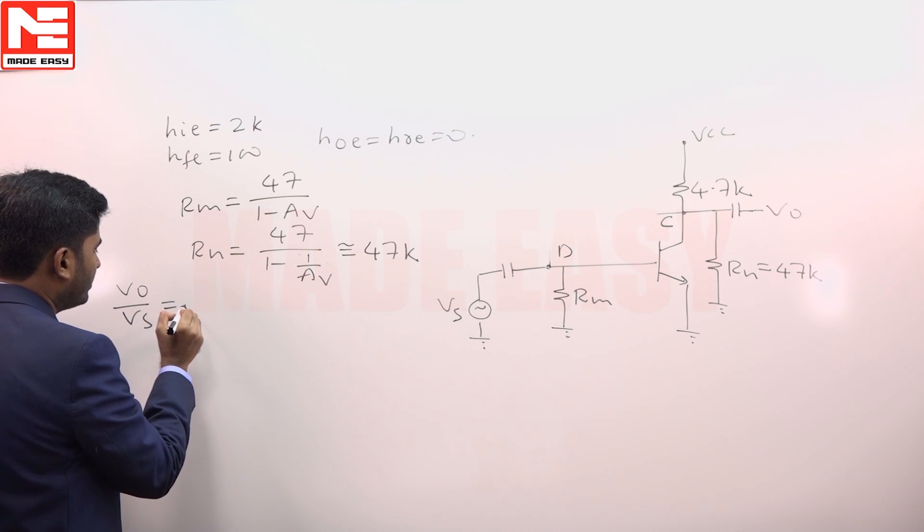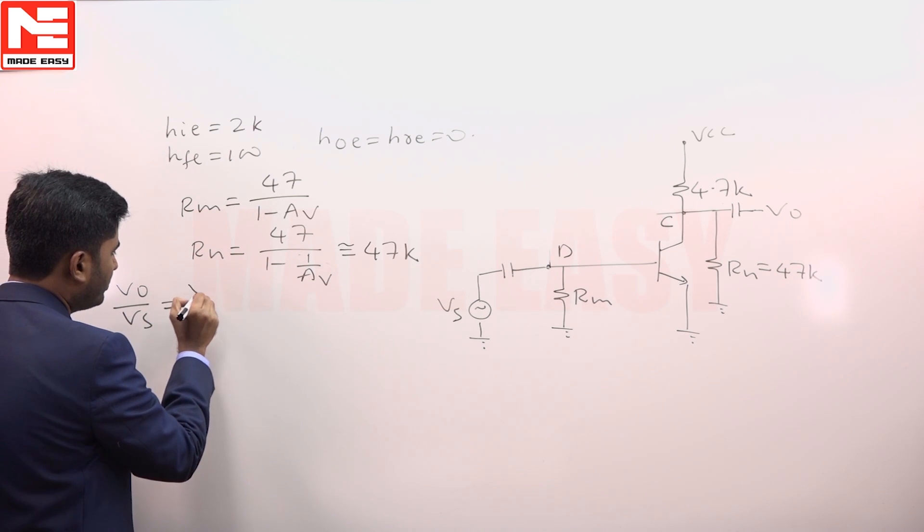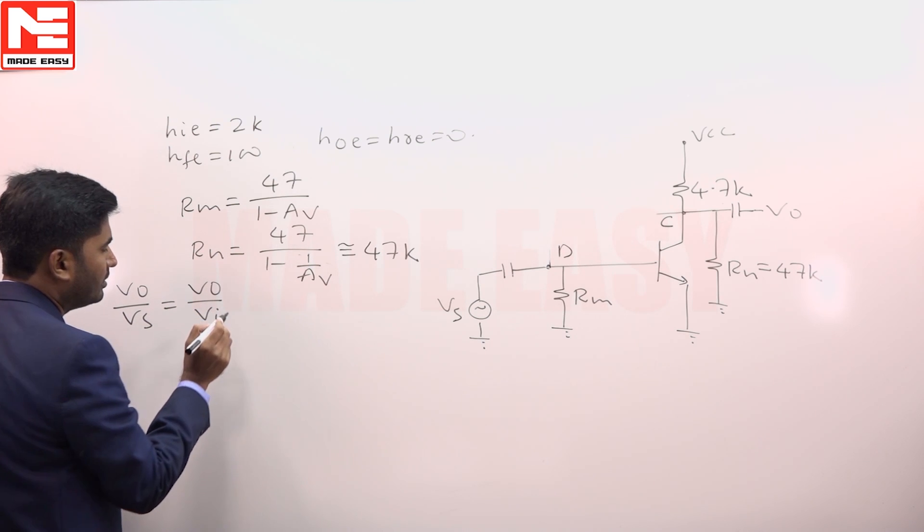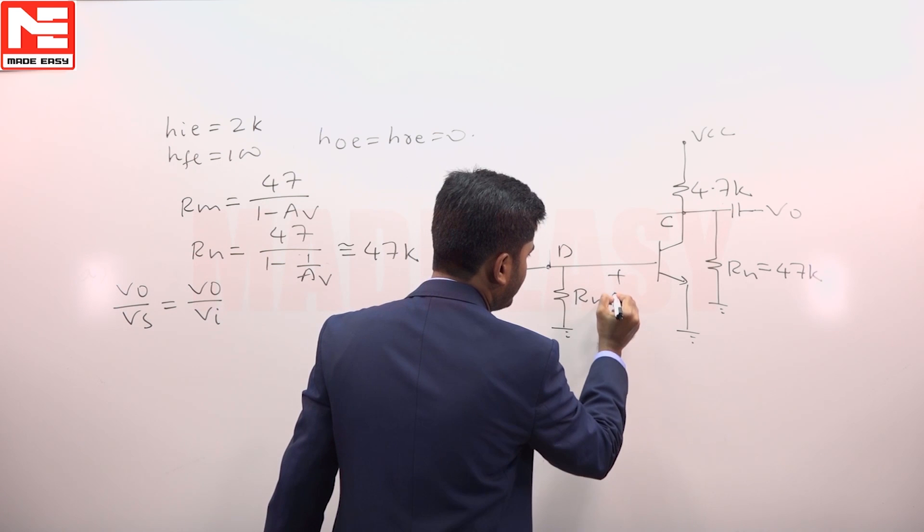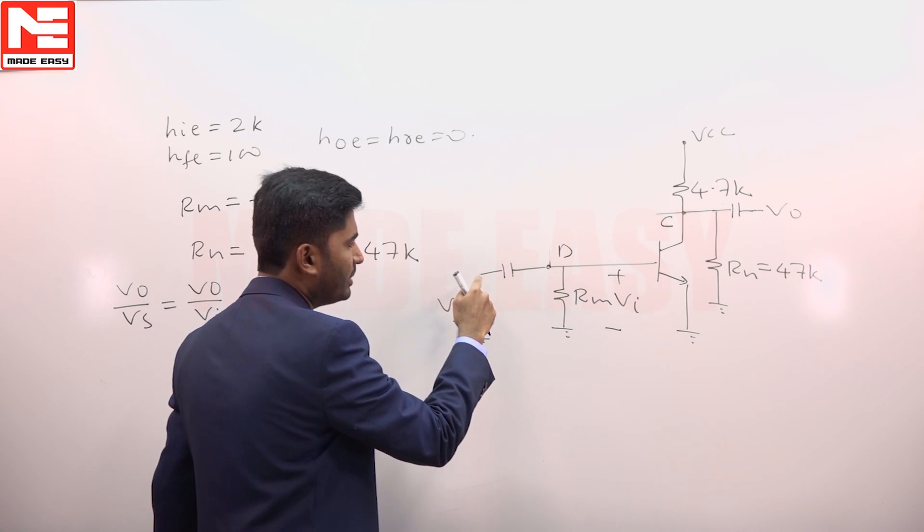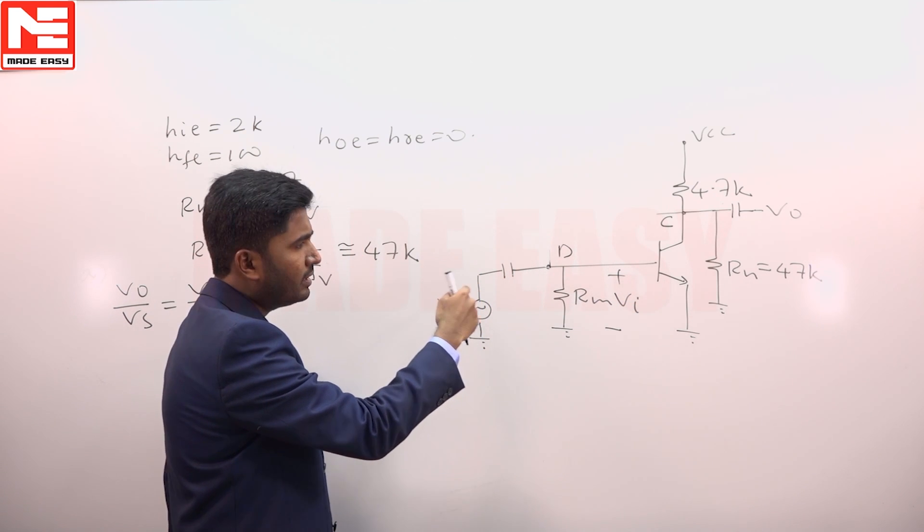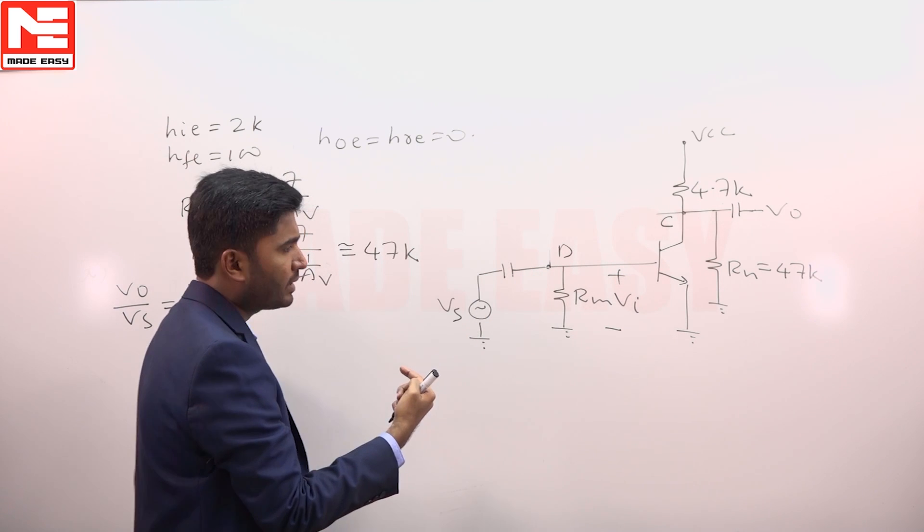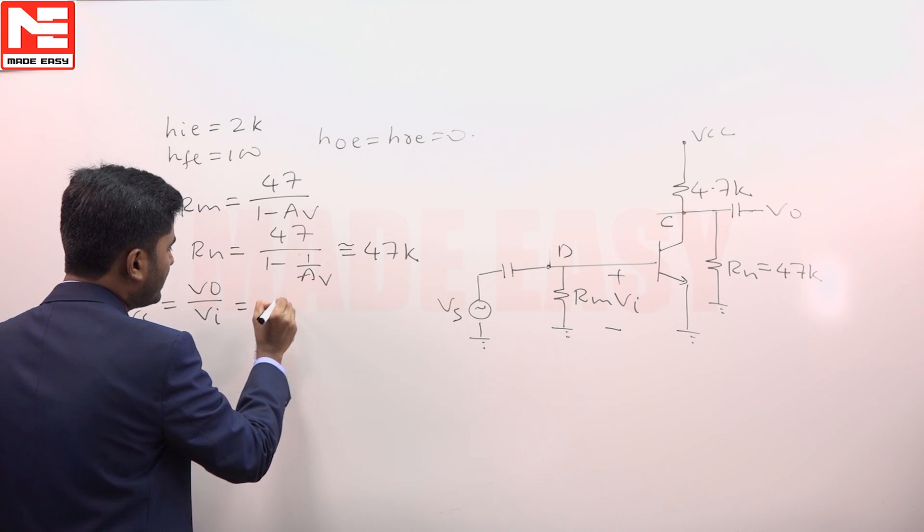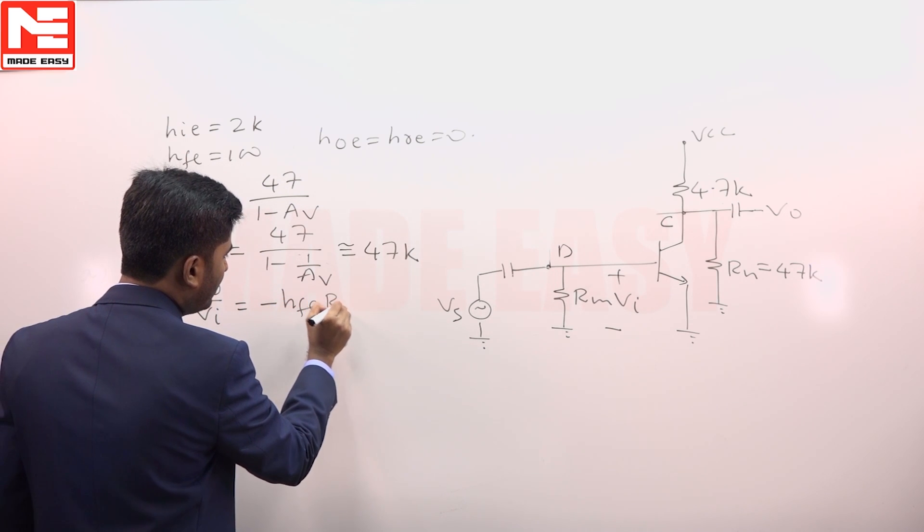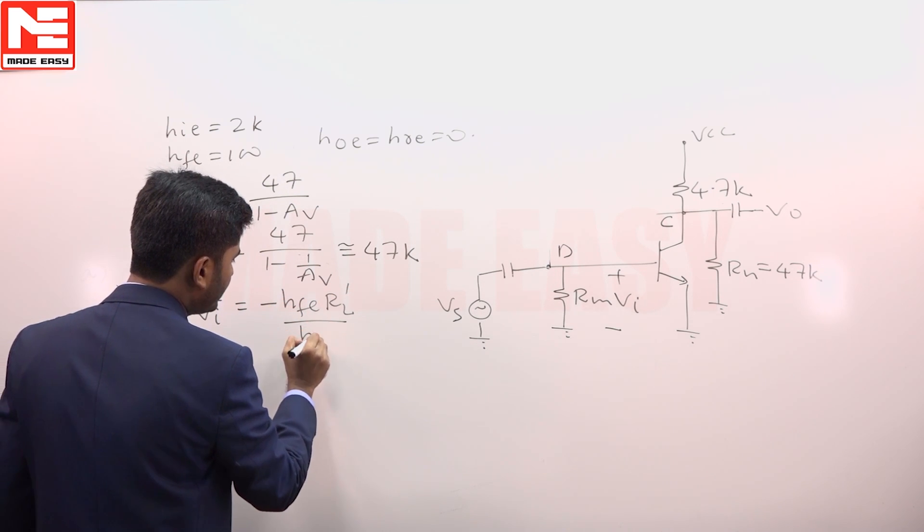And the voltage gain A v is equal to V naught by V i. V s and V i are equal here because source impedance is zero. So we can take V naught by V s same as V naught by V i, and that V naught by V i for this common emitter amplifier is written as minus H f e into R l dash divided by H i e.